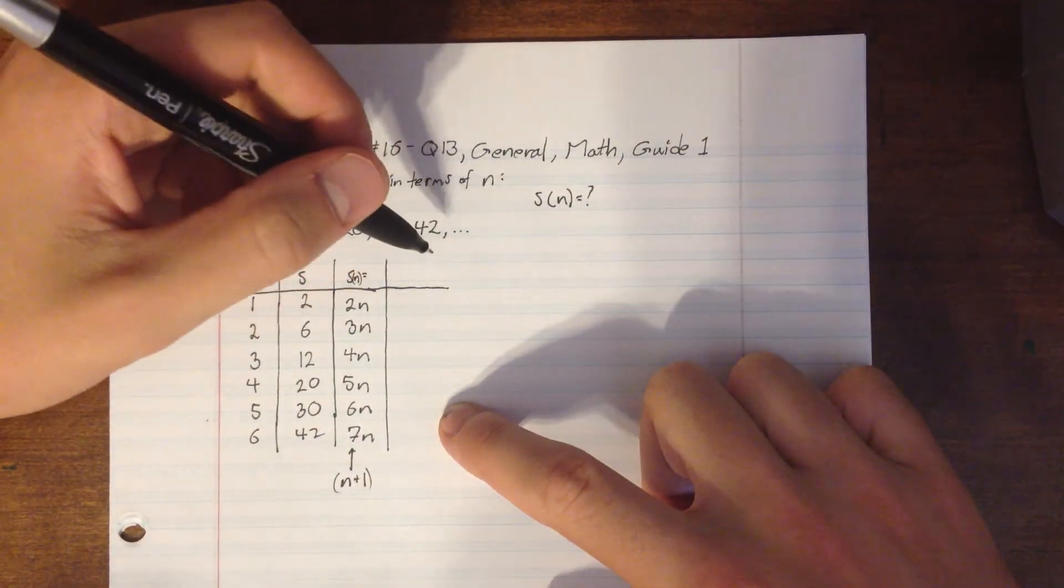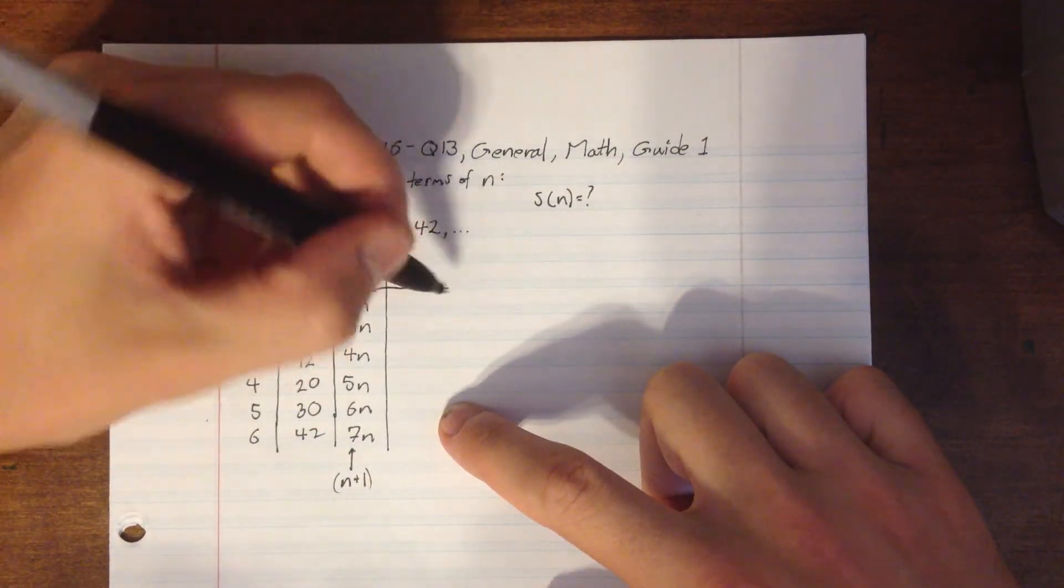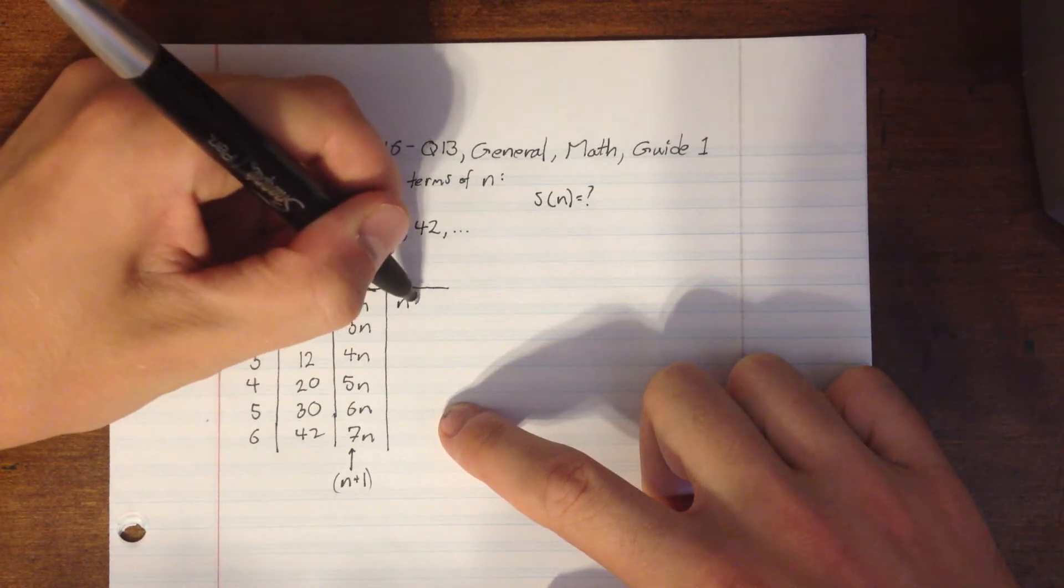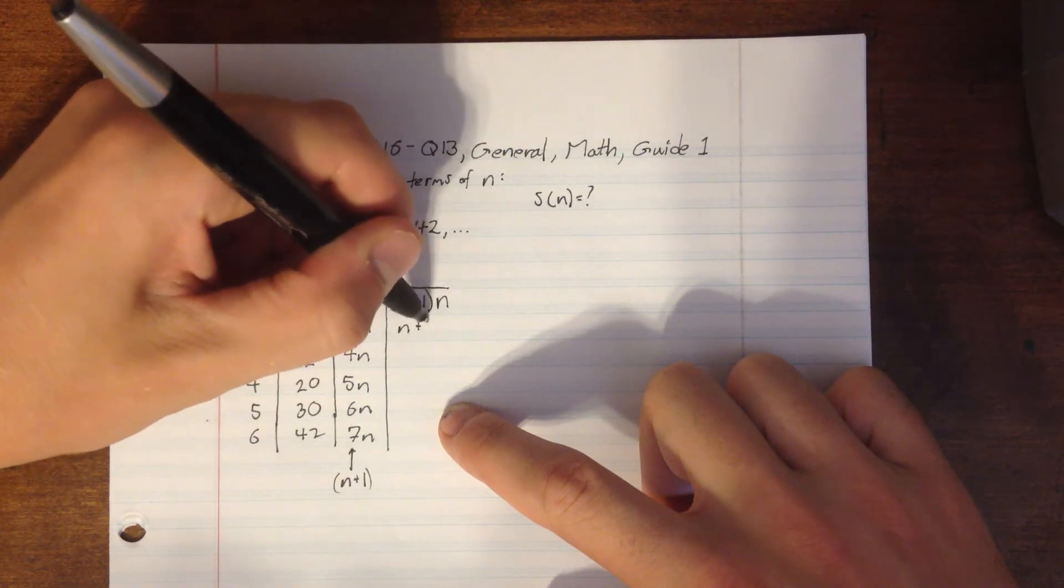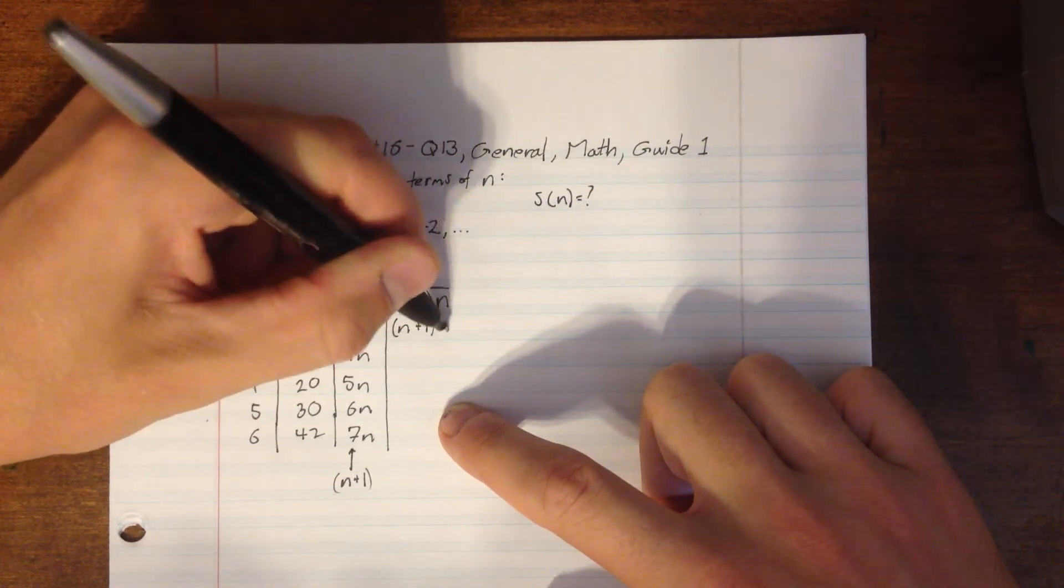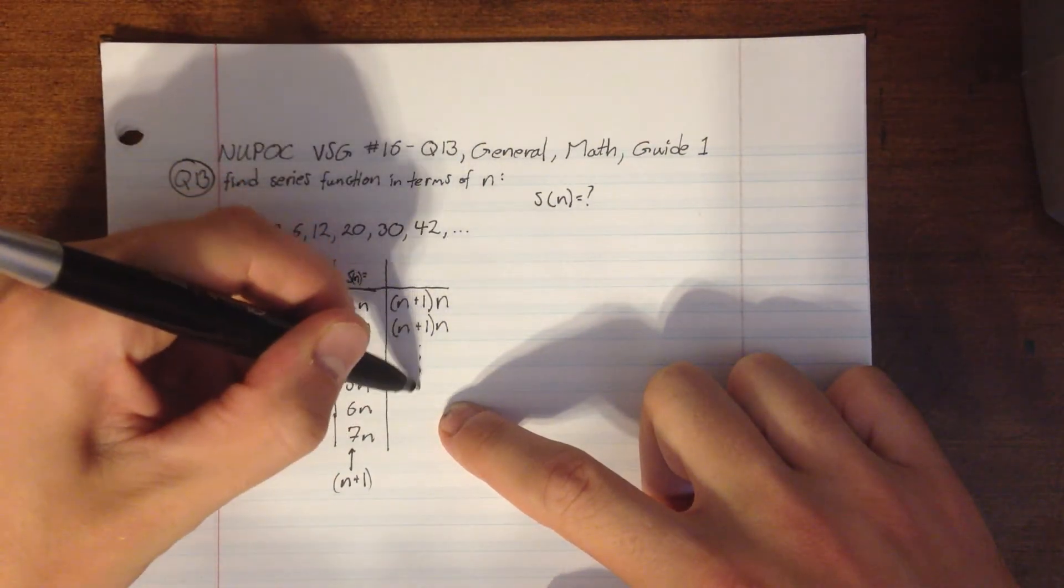So now we've eliminated all of our coefficients. Everything is in terms of n. So we can say here, yep, that works: n plus 1 times n, n plus 1 times n, etc., all the way down.